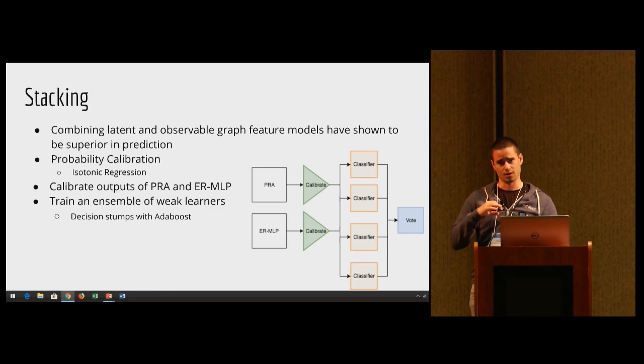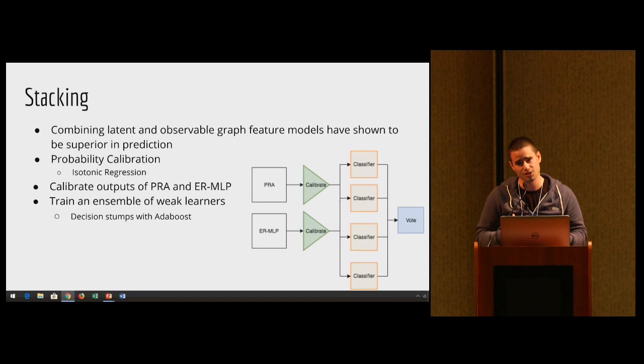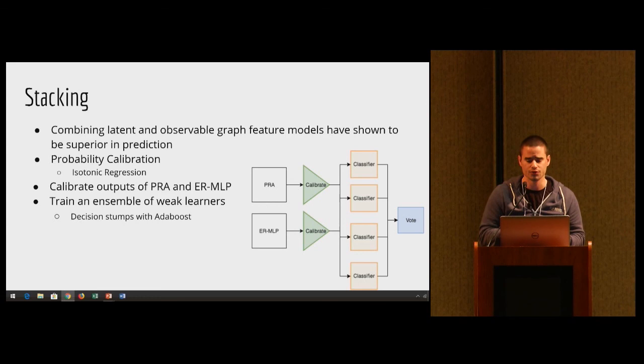Once you have these two trained models, you have the ERMLP, which is a latent feature model that's really good at providing a holistic perspective over the graph because you're using all the edges when you make your prediction. Or the PRA, an observable graph feature model where you use kind of a localized perspective approach because you're performing a random walk that's local to that actual specific edge. It has been shown that using a combination of these has shown to be able to exploit both types of powers when making your prediction.